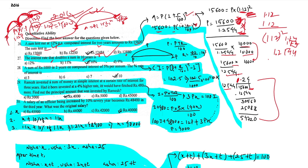The interest rate that doubles a sum in 10 years: the first price is P and the final is double, which is 2P. Using simple interest: SI = PTR/100. Since interest equals P, we get P = PTR/100, which gives rate equals 100 divided by T, so rate equals 10%.